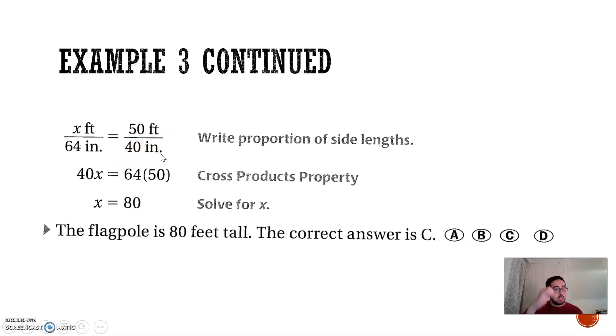Now, the reason why this is okay is because you have feet over inch, feet over inch. The proportions are going to be okay. So, you don't actually need to change the units into all the same units. If you cross multiply here, you get 40X is equal to 64 times 50. And then when you divide by 40, you get X is equal to 80, which means the flagpole is 80 feet tall. Therefore, the correct answer is C.